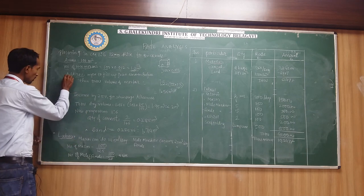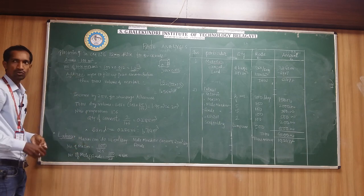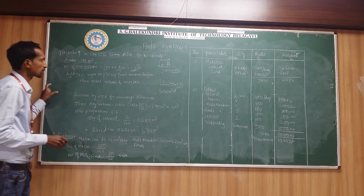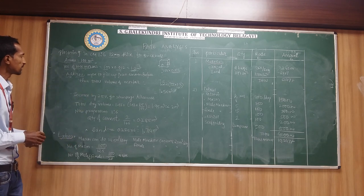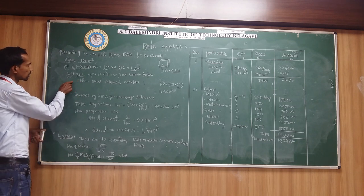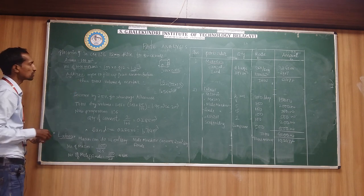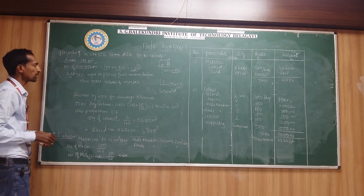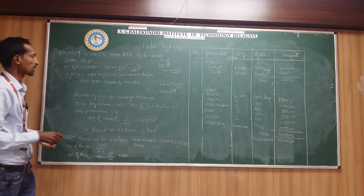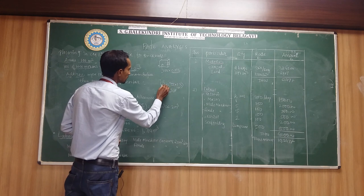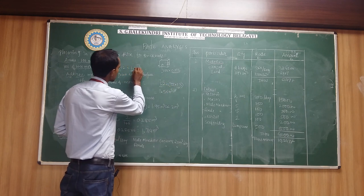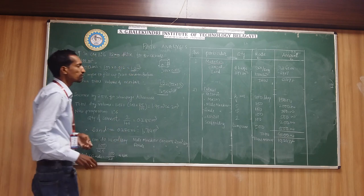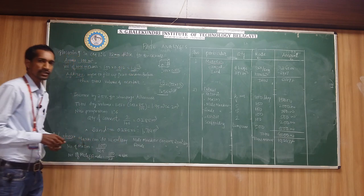We are going to add 30% more to fill up the joints and the uneven surface. When constructing brick masonry, there will be some gap between the joints and the surface is not even. For that purpose, we add 30% extra to 1.2 meter cube, giving a total of 1.56 meter cube.